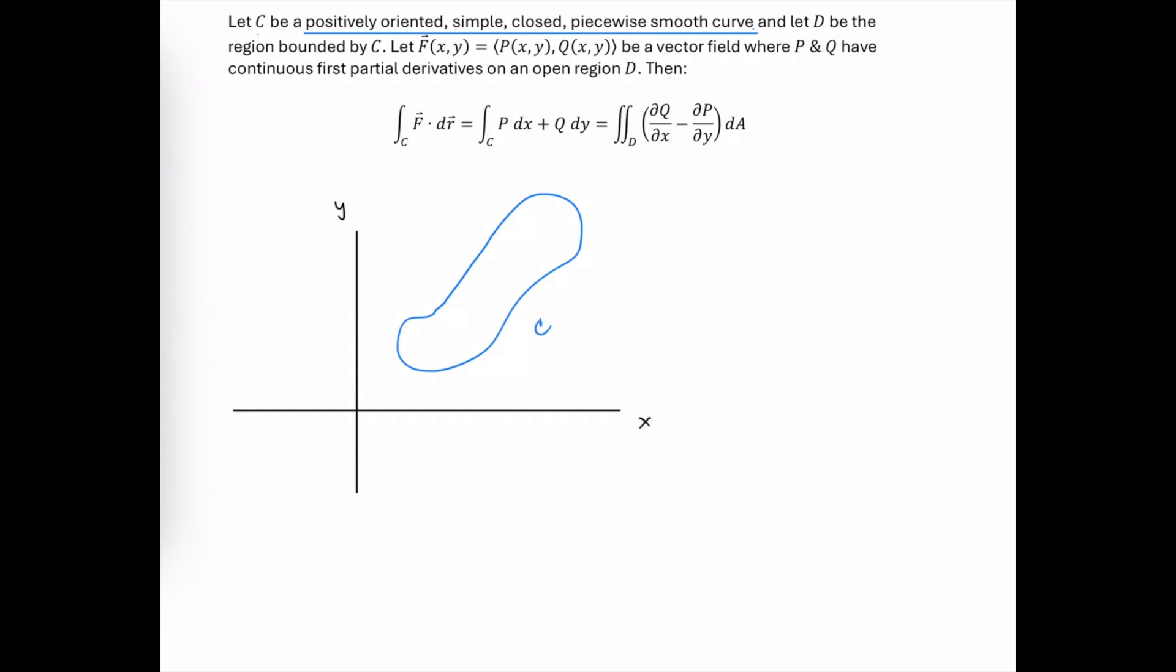So let's consider some arbitrary path C, and we'll say that it's simple because the path does not ever cross itself. Our path is closed because the initial point is equal to the terminal point, meaning that if we started at a point P0 and we end up at the same point where we started, that means our curve is closed. Our path is also positively oriented, which means that we are traveling counterclockwise around the outside of the path.